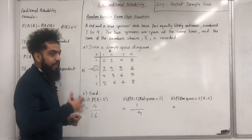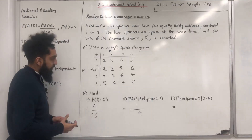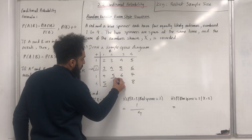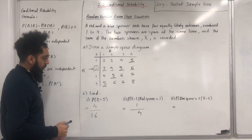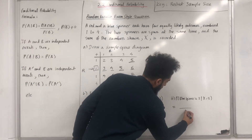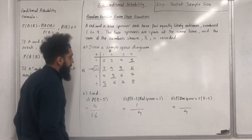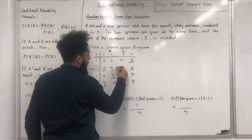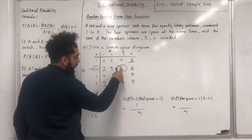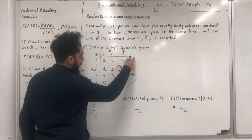For part three, probability blue spinner is 3 given that the sum X equals 5: given the sum is 5, there are 4 outcomes, so the sample size reduces from 16 to 4. Out of those 4 outcomes where the sum is 5, the blue spinner is 3 in 1 case (red=2, blue=3), giving 1/4.